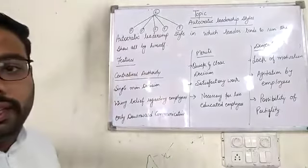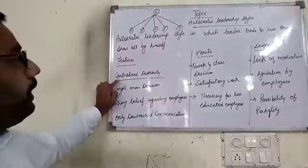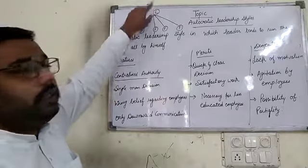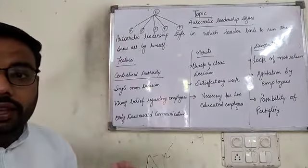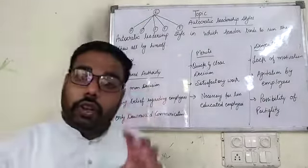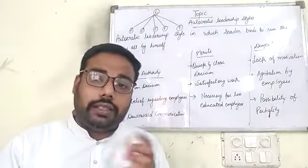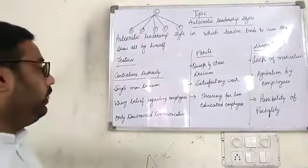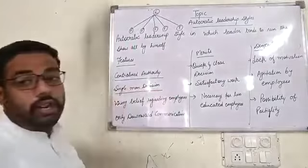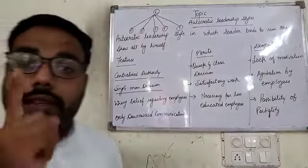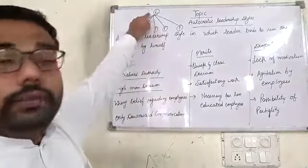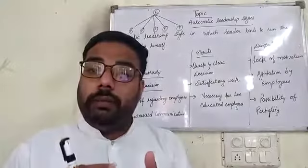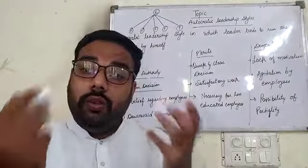The features of autocratic leadership style: First is centralized authority — authority that lies with the single person, that is the leader. Second is single-man decision — each and every decision is taken by a single person, that is the leader. He is the only person who dictates the terms and conditions and rules and regulations of the organization.